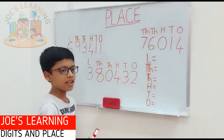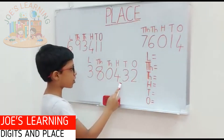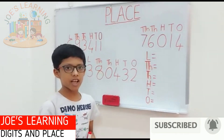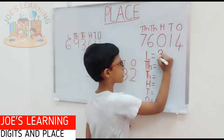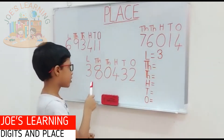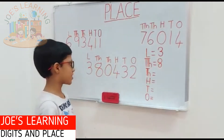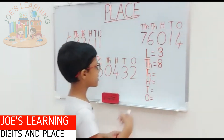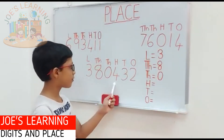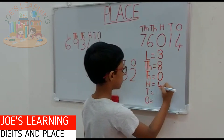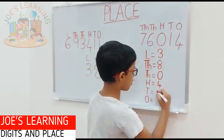Now for the last example, the number is 3,80,432. Which number is in the 1's place? It is 2, so let's put 2 in the 1's place. Which number is in the 10's place? It is 3. Which number is in the 100's place? It is 4. Which number is in the 1000's place? It is 0. Which number is in the 10,000's place? It is 8.